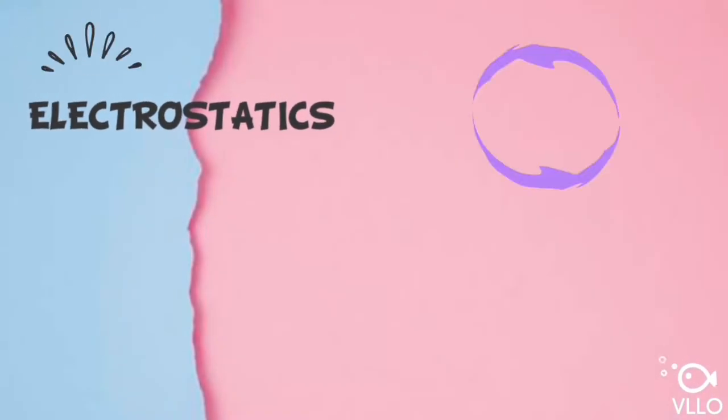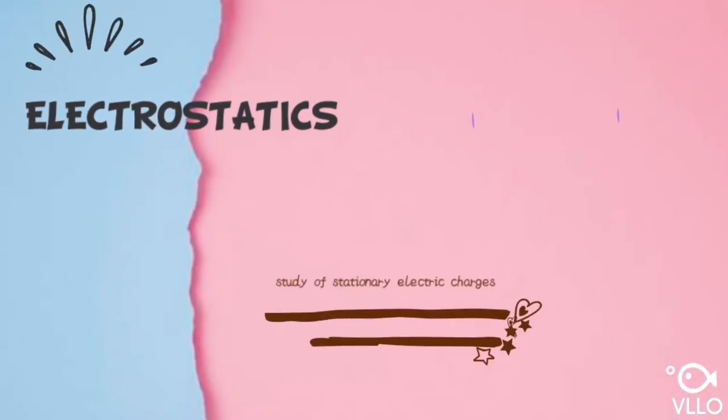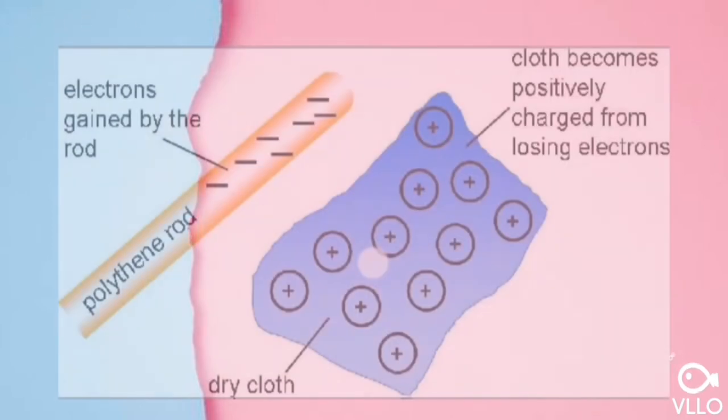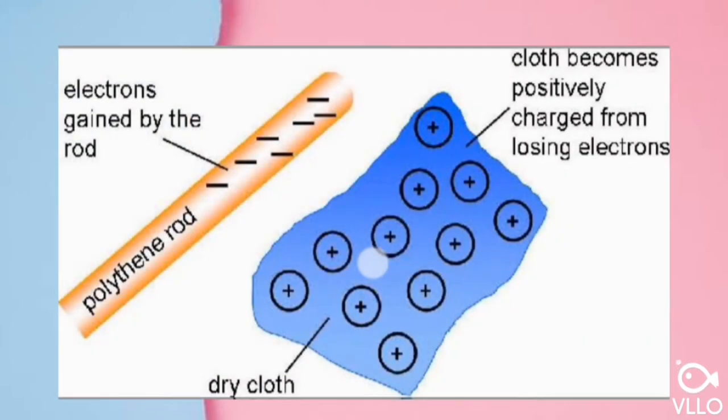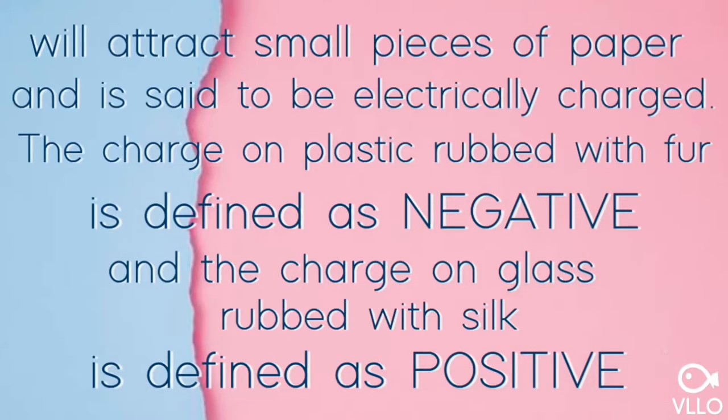Electrostatics, as the name implies, is the study of stationary electric charges. A rod of plastic rubbed with fur or a rod of glass rubbed with silk will attract small pieces of paper and is said to be electrically charged. The charge on plastic rubbed with fur is defined as negative and the charge on glass rubbed with silk is defined as positive.